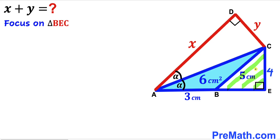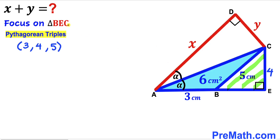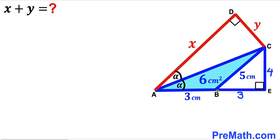Now let's focus on right triangle BEC, whose known side lengths are 5 and 4. Recalling the Pythagorean triplet 3-4-5, since two sides are 4 and 5, the unknown side BE must be 3 cm. Therefore, the full segment AE has length 3 + 3 = 6 cm.